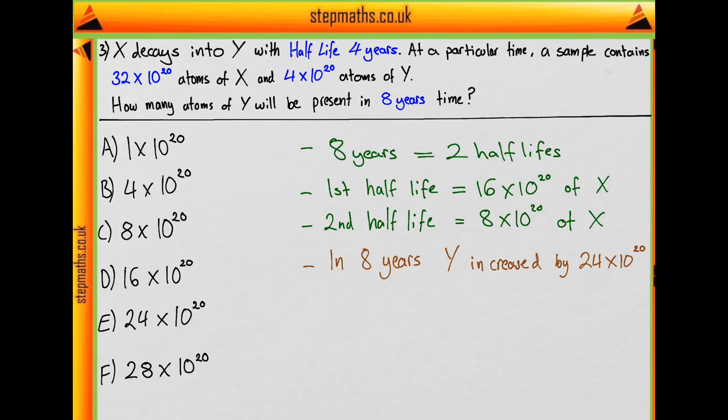To work out the amount of atoms of Y present, we simply add the increase to the initial amount of Y we had. That would be 4 times 10 to the 20 plus 24 times 10 to the 20, giving us our answer of 28 times 10 to the power of 20 atoms of Y. So our answer here is F.